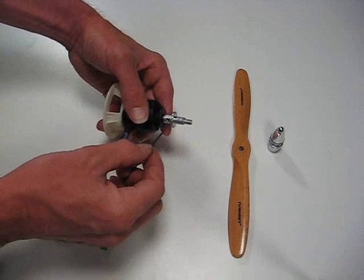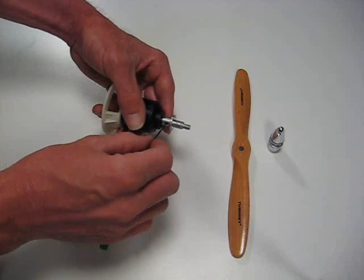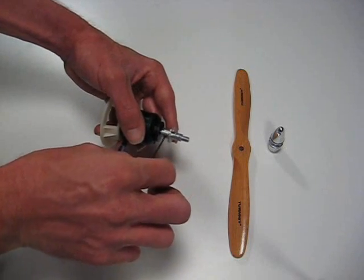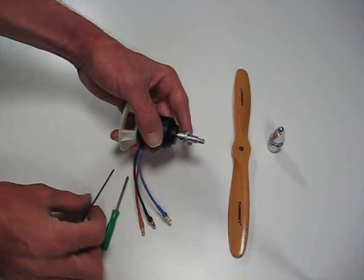Get an Allen wrench of the appropriate size. Insert it into the prop shaft Allen set screw here and loosen it. You don't need to completely remove it.